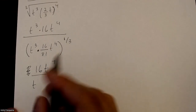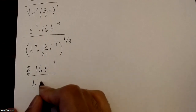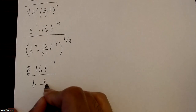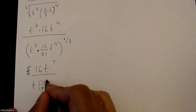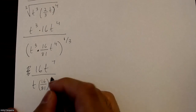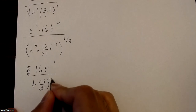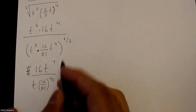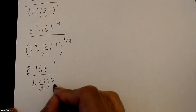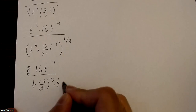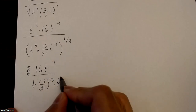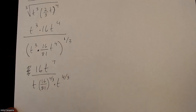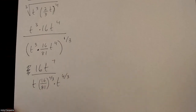16 over 81 — I'm just going to leave that as 16 over 81 to the power of 1 over 3. And this is going to turn into t to the power of 4 times 1 over 3, which is just 4 over 3.